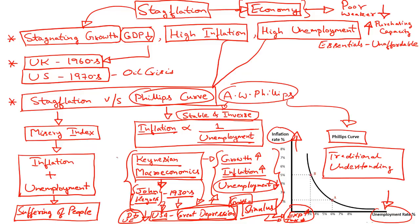Since then, this model became very popular around the world and became the standard model to be followed by governments whenever their economies were in recession. In fact, the Keynesian model is followed even to this day. Whenever an economy goes into recession, governments provide a stimulus — they increase government expenditure and reduce taxes. We have seen the same policy being followed by the Indian government as well over the last four to five months in order to revive growth and investment.